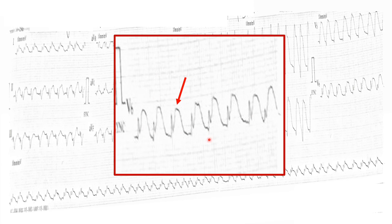This is the zoomed-in view of lead V6. We can clearly see ST segment elevation, and the T wave also appears tall compared to the R wave. When the T wave is tall and there is ST segment elevation, we must first rule out myocardial infarction in this patient.